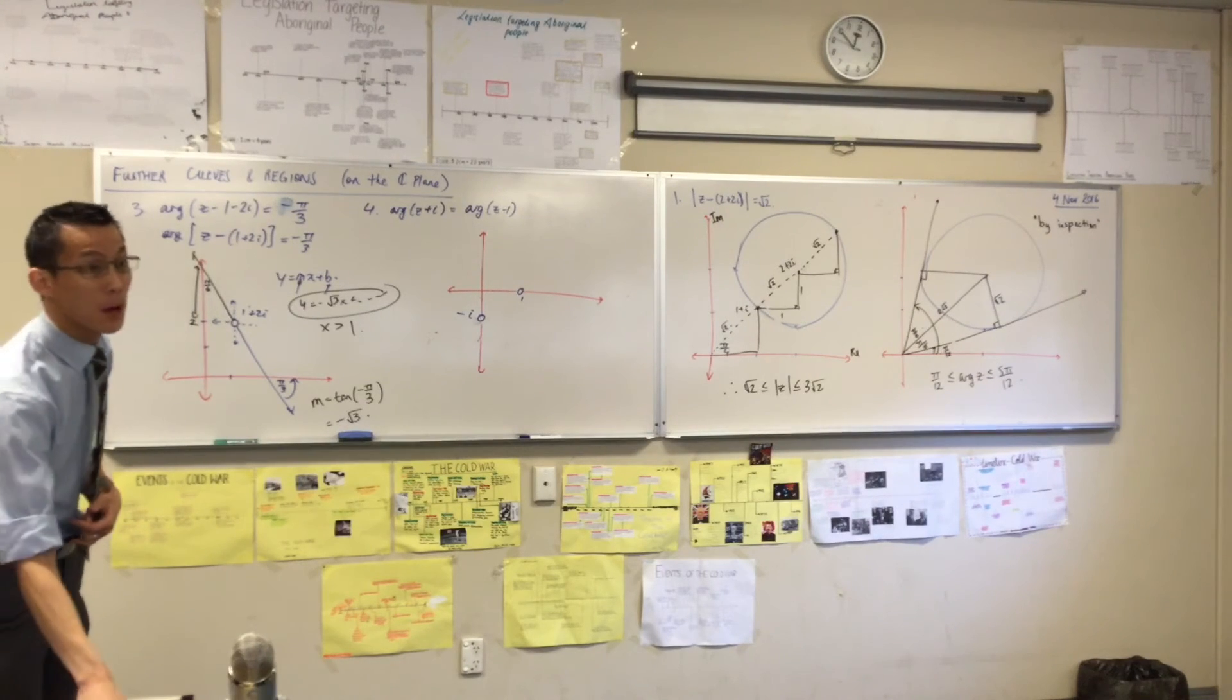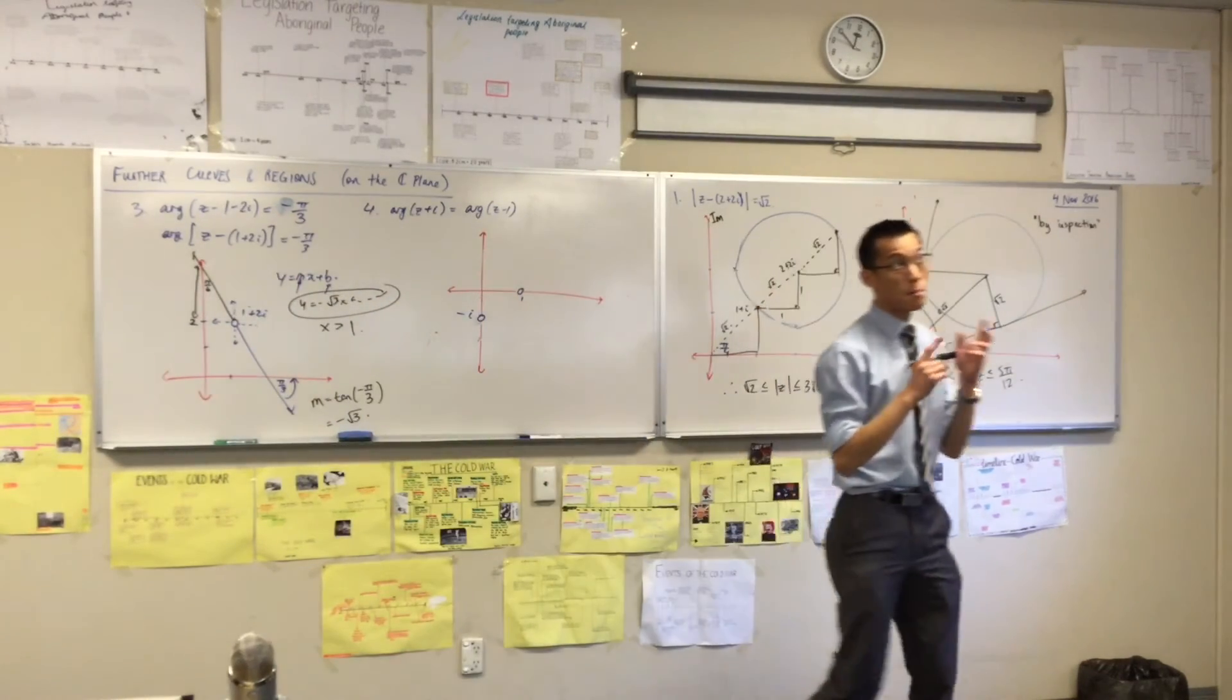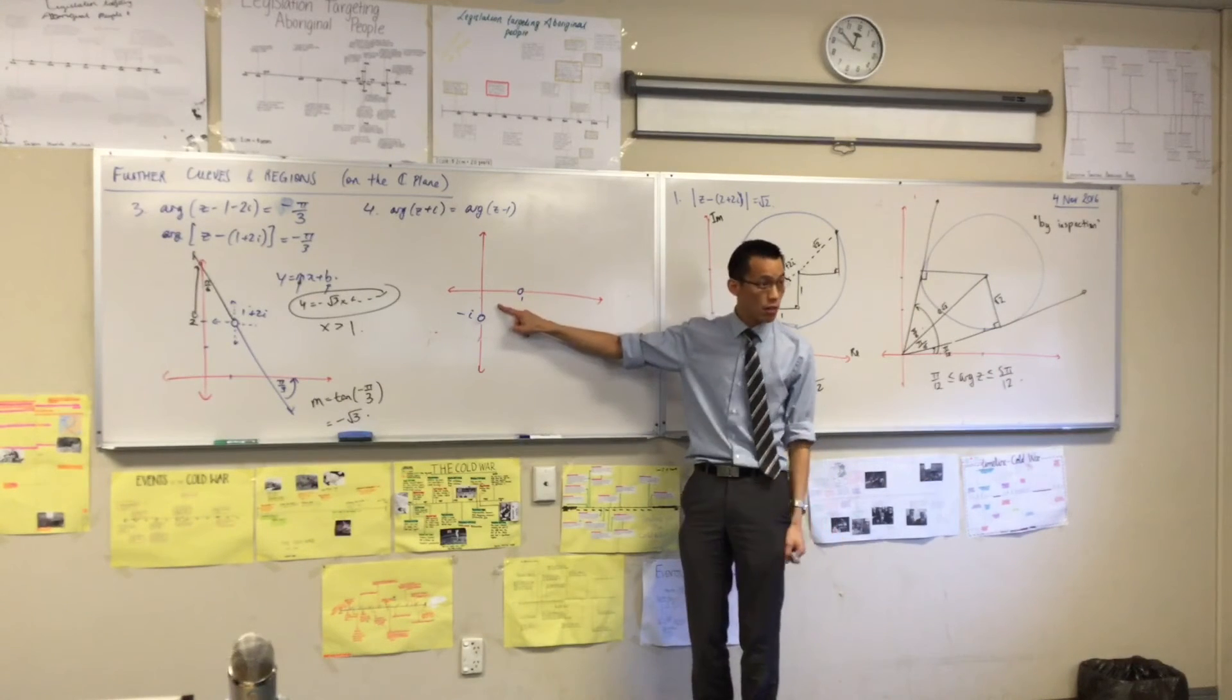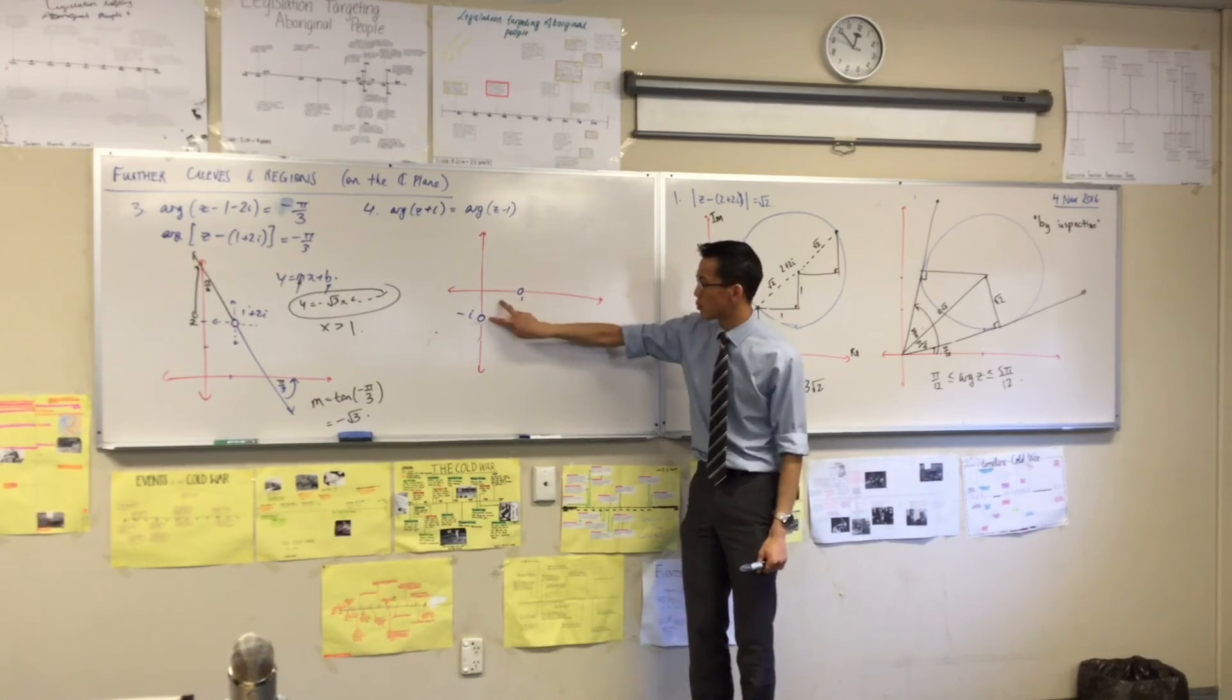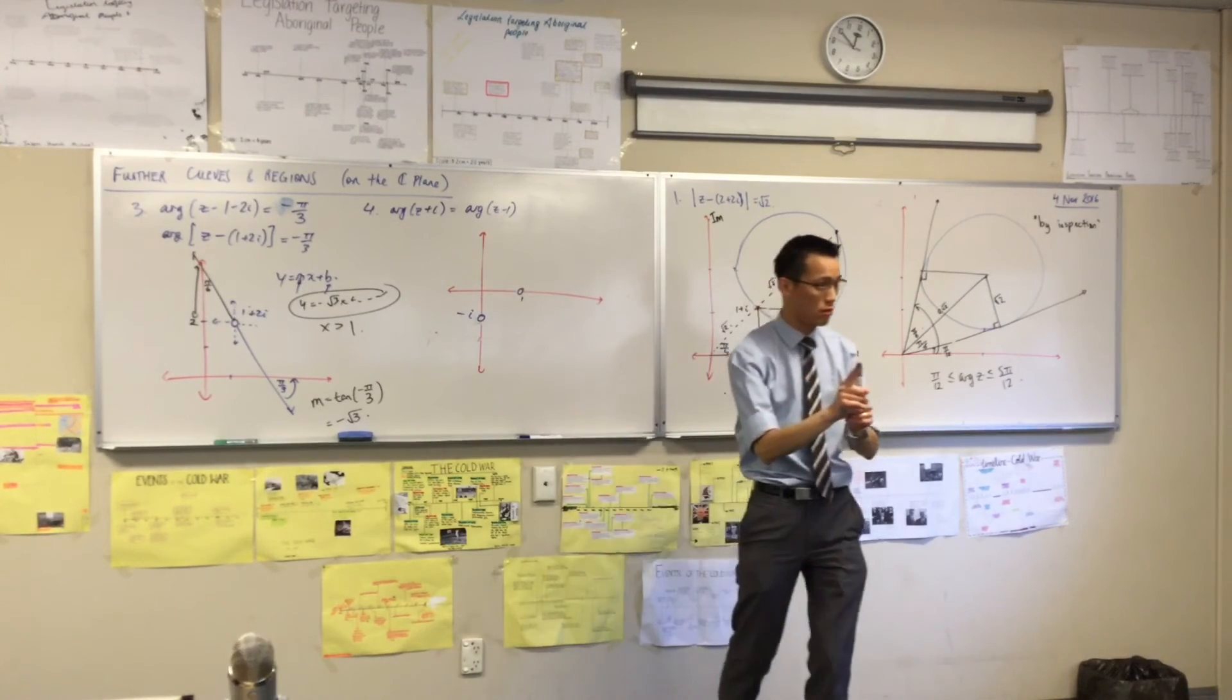Now we've seen the perpendicular bisector before, haven't we? It was useful when we're thinking about the moduli being the same. Because if, for example, you stood here, you're like, the modulus will be the same. Same distance. I could stand here, the modulus will be the same. We drew this out on Tuesday.